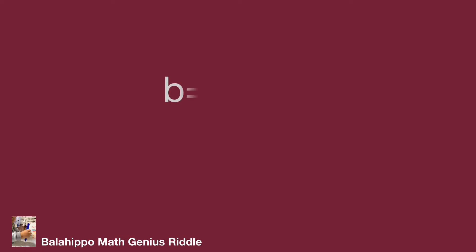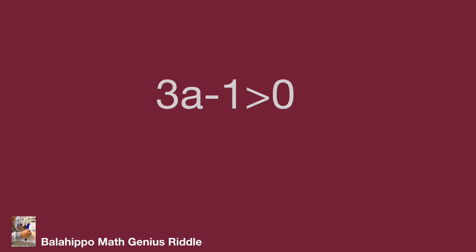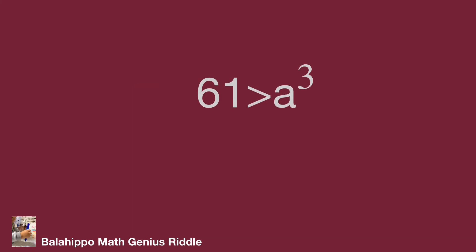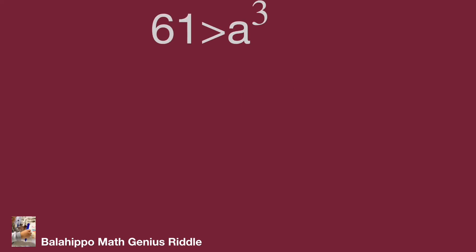Since b is a positive integer, (61 minus a cubed) over (3a minus 1) must be larger than 0. We know 3a minus 1 is larger than 0, so 61 minus a cubed must also be larger than 0. This means 61 is larger than a cubed.